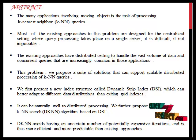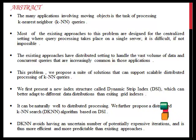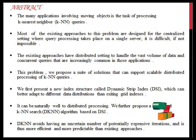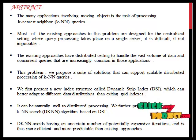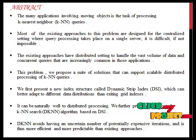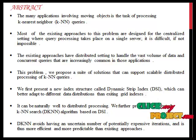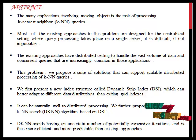To address this problem, we propose a solution that can support scalable distributed processing of KNN queries. We first present a new index structure called the Dynamic Strip Index (DSI), which can be better adapted to different data distributions than existing grid indexes. Moreover, it can be naturally distributed across a cluster, lending itself well to distributed processing. We further propose a Distributed KNN algorithm called DKNN based on DSI. The DKNN avoids an uncertain number of potentially expensive iterations and is thus more efficient and more predictable than existing approaches.